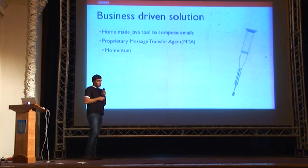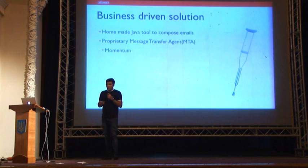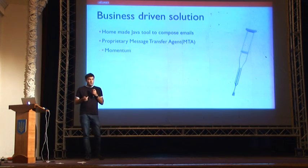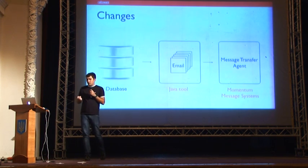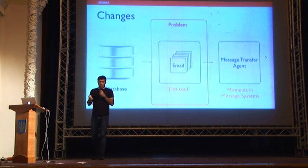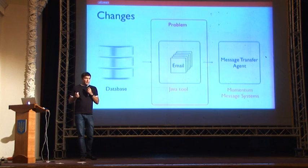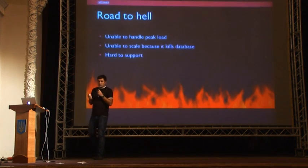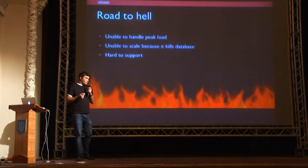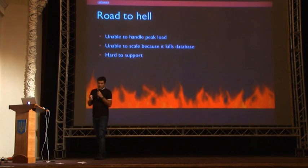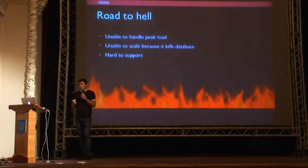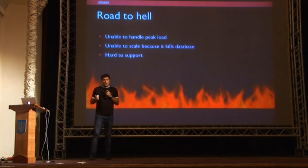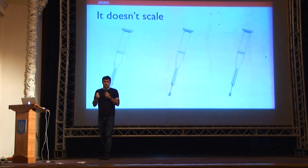The business decided to replace the current system with a faster one. They proposed a homemade Java tool and a proprietary message transfer agent. The MTA was really good, but the Java tool was really bad. It became a pain to maintain — it was poorly coded, couldn't scale, killed the database, and was hard to support in Java.